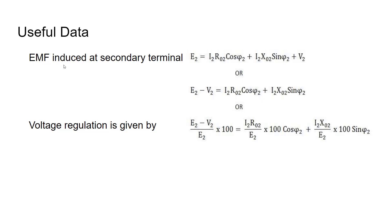The EMF induced at the secondary terminal of the transformer, denoted as E2, is given as: I2 × R02 × cos φ2 + I2 × X02 × sin φ2 + the terminal voltage of the transformer. Here, E2 is the induced EMF, I2 is the full load current, R02 is the equivalent resistance, and X02 is the equivalent reactance of the transformer.